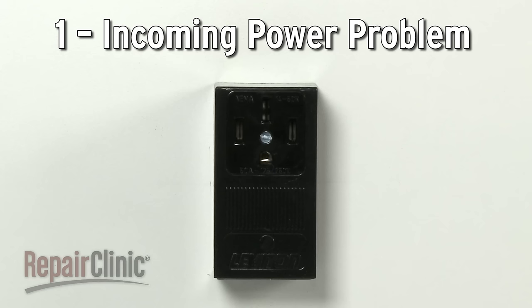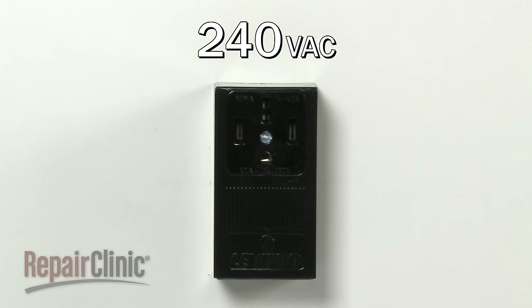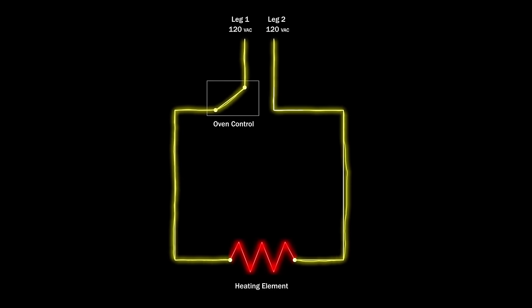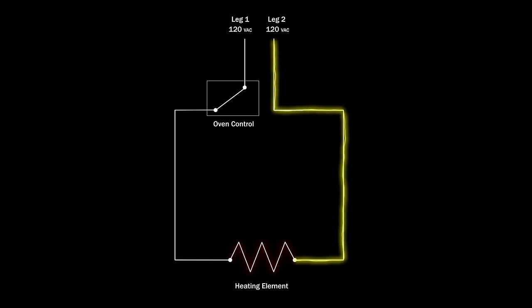To fully operate, most electric ranges require 240 volts of alternating current running through two legs of voltage, each carrying 120 volts. If one leg of voltage is shut off by a tripped breaker or blown fuse, the oven won't turn on.